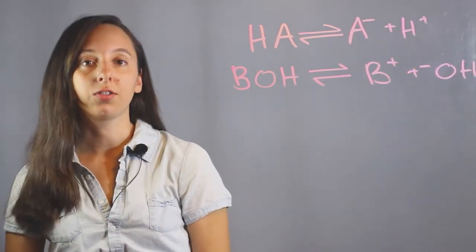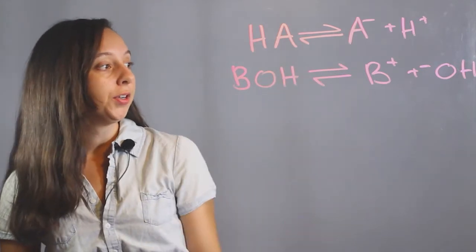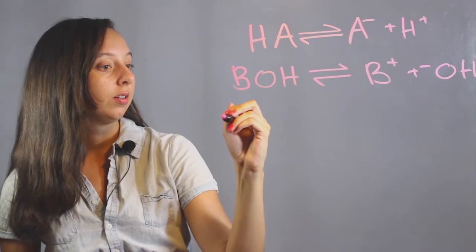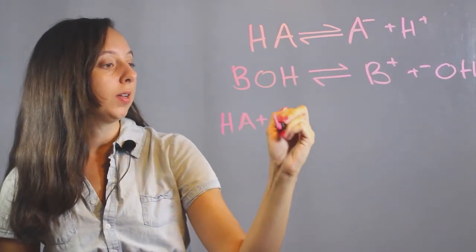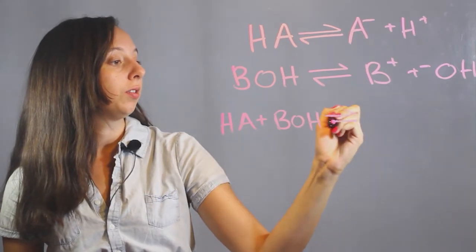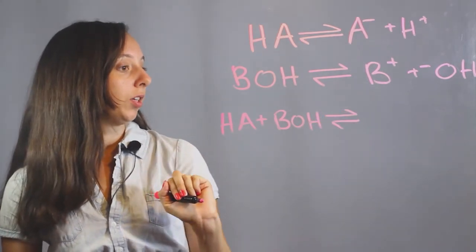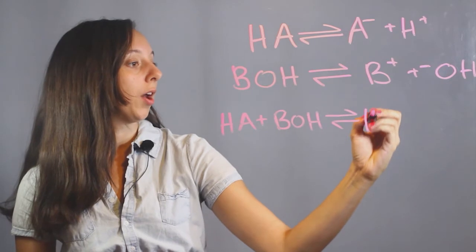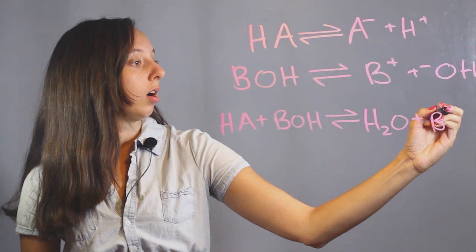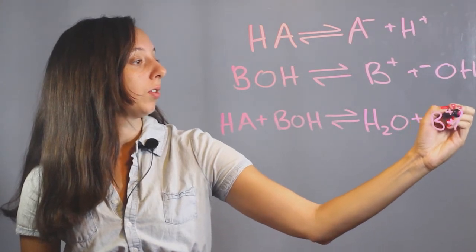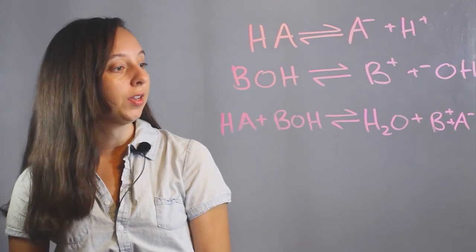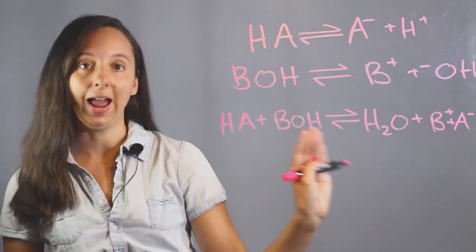And so this is our reaction broken up. So when we put these two together, it actually turns out to be HA plus BOH is going to disassociate and it's going to form water, plus our base disassociates, and we have our acid here. And so this is the general equation for an acid-base reaction.